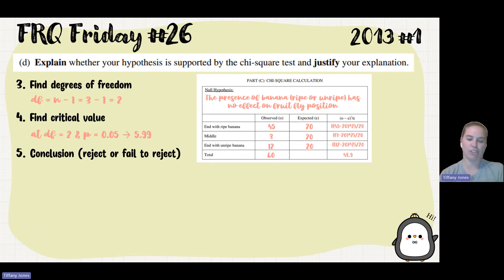So in terms of reject or fail to reject, what I'm going to do is I'm going to compare that value. So 5.99 to 48.9.